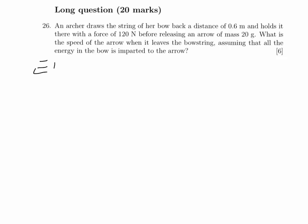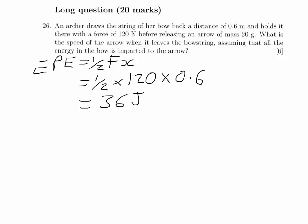This long question is a mechanics question, so we're going to start off with finding the elastic potential energy of our drawn back bow and arrow. Elastic potential energy is half times the force times the distance. So it's half times our force, which is 120 newtons, times the distance that it's pulled back, 0.6 metres. That gives us 36 joules of energy stored in this drawn back bow.